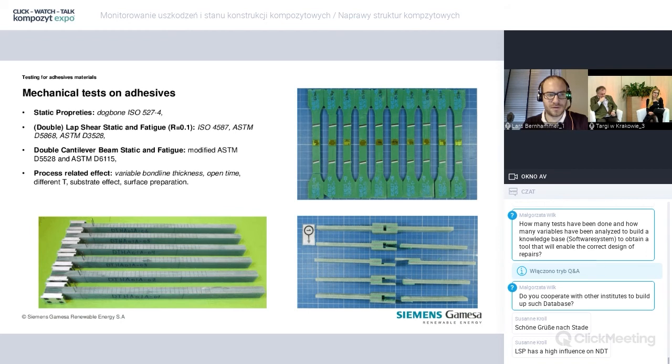We have again a set of different test setups that we use as standard, could be double cantilever beam, could be shear strength. And what we also quite often test is process variation in the production. So different opening times, different surface activation in order to optimize our product portfolio.